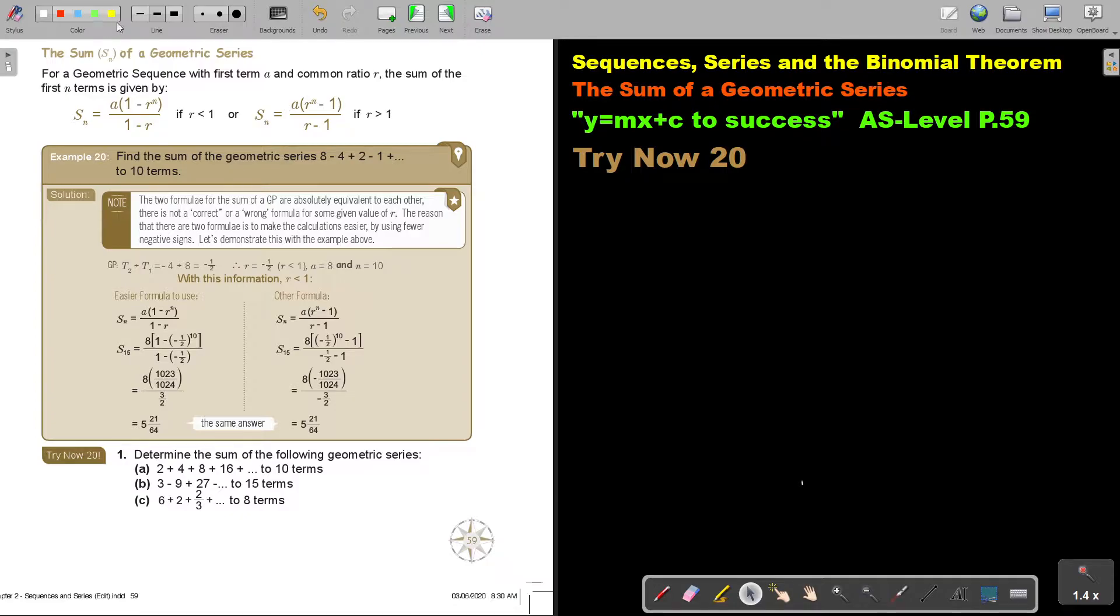Just remember, this is not equal to A times 1 minus R^N over R minus 1. So you cannot put 1 in front and then R in front. It's either the R's in front or the 1's in front. So this will be incorrect.